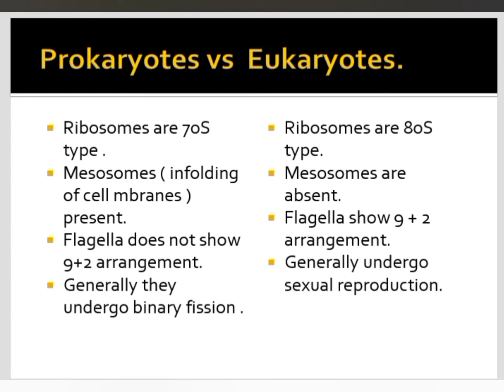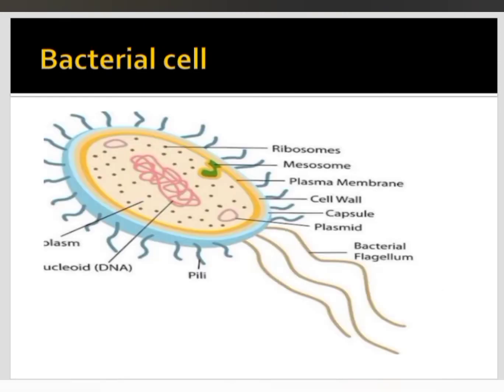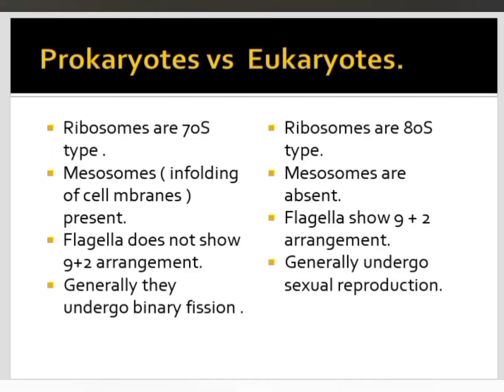Coming to mesosomes — infoldings of the cell membrane form the mesosomes. They help in binary fission (reproduction of bacteria) and respiration (ATP synthesis). Mesosomes are present only in prokaryotes and absent in eukaryotes.